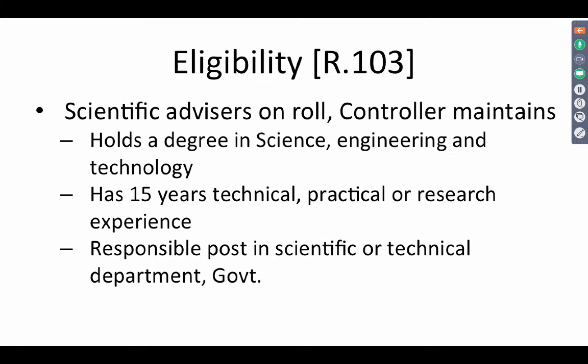What is the eligibility for becoming a scientific advisor? The eligibility is detailed in Rule 103. There shall be a roll of scientific advisors maintained by the controller. They need to hold a degree in science, engineering, or technology, and should have 15 years of technical, practical, or research experience. Persons holding responsible posts in scientific or technical departments of the government, IITs, IIScs, or government engineering colleges normally appear on this roll.